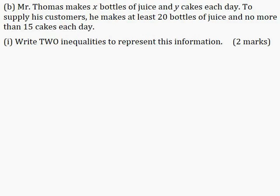Part B: Mr. Thomas makes x bottles of juice and y cakes each day. To supply his customers, he makes at least 20 bottles of juice and no more than 15 cakes each day. Part 1: write two inequalities to represent this information for two marks. Mr. Thomas makes at least 20 bottles of juice, so x ≥ 20. And he makes no more than 15 cakes, so y ≤ 15.